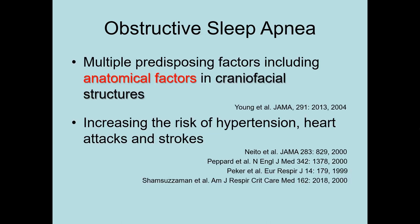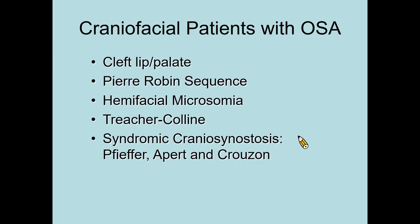When thinking about the causes of the disease, we need to look at the anatomical factors involving craniofacial structures. In the craniofacial center, many patients with cleft lip and palate, Pierre Robin sequence, hemifacial microsomia, Treacher Collins, or craniosynostosis are all candidates with a high incidence of OSA.